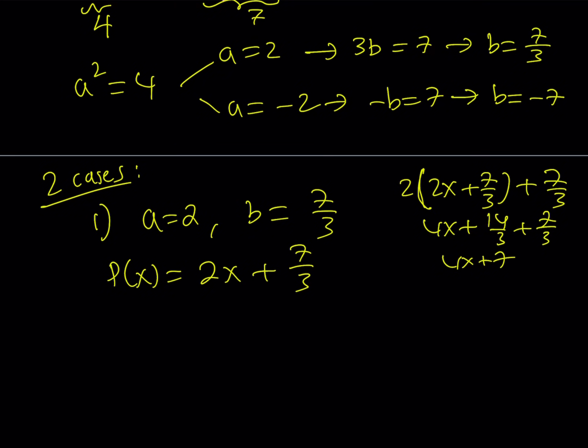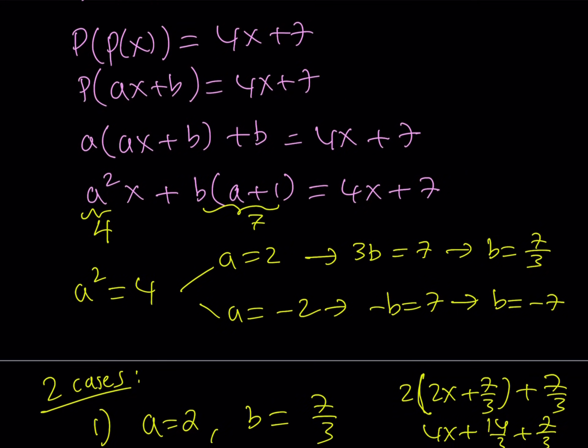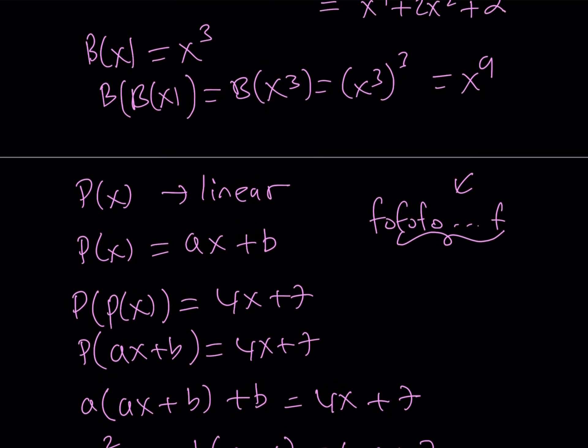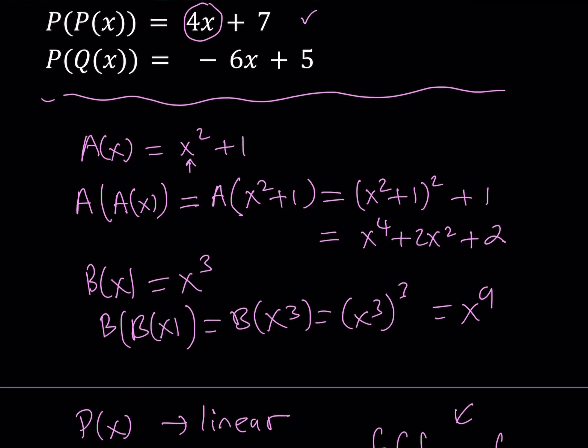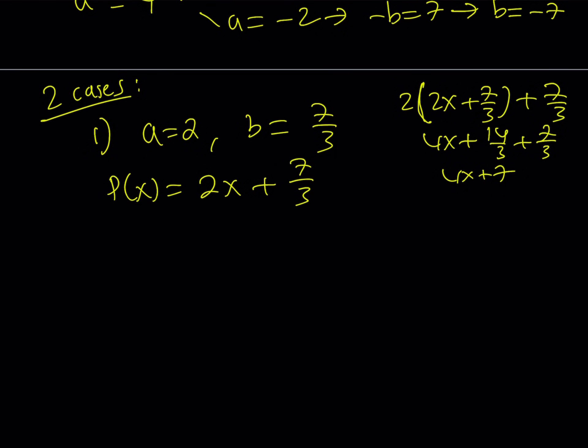So now P of X can be this one, and what about Q of X? Well, P is composed with Q and you know composition is from right to left. So P of Q of X, let's write that down as an equation. P of Q of X is given to us as negative 6X plus 5. So we're supposed to find Q of X from here where P of X equals 2X plus 7 thirds. Let's apply the definition of P to Q of X, that gives us 2 times Q of X plus 7 thirds equals negative 6X plus 5.